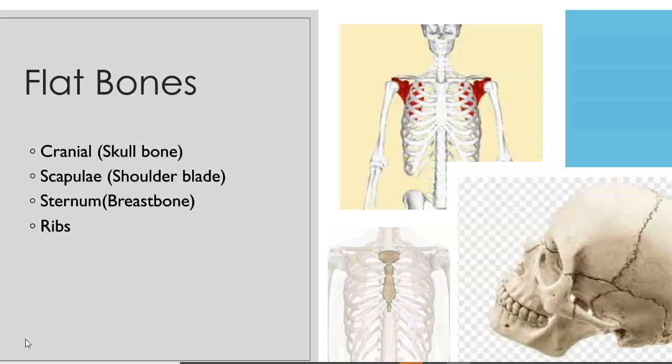Some examples of flat bones would be the cranial bones of your skull, your scapulae and shoulders, your sternum or breastbone, and also your ribs.